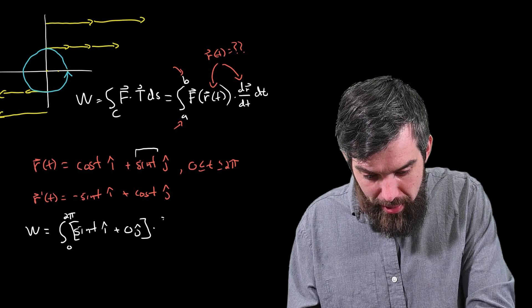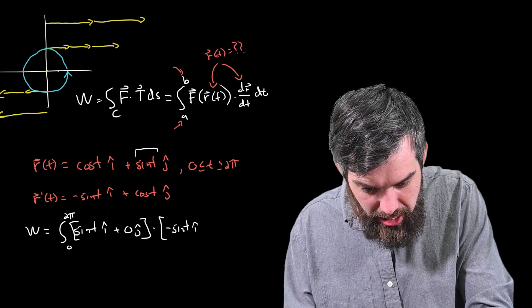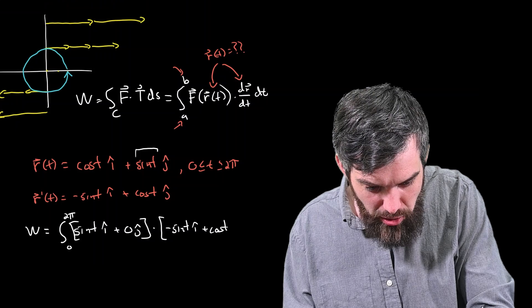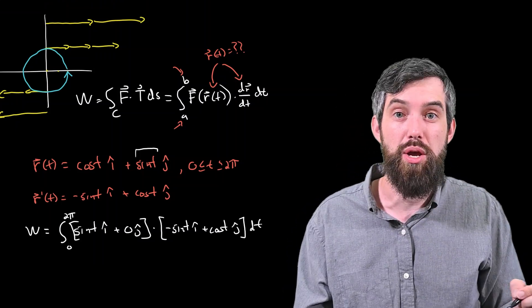Then, dotted with the r', or the dr/dt. And so this is going to be a -sin(t) in the i-hat plus a cos(t) that won't matter in the j-hat, but we'll write it down nevertheless, and then integrate it out with respect to t.